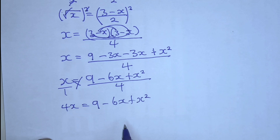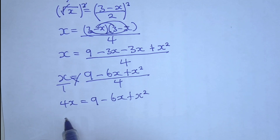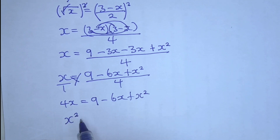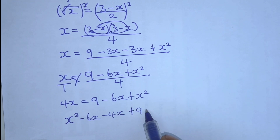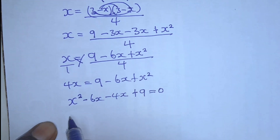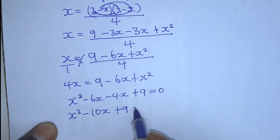So, from this step we can collect the like terms. We have x squared minus 6x minus 4x plus 9, which is equal to 0. So, x squared minus 10x plus 9, which is equal to 0.